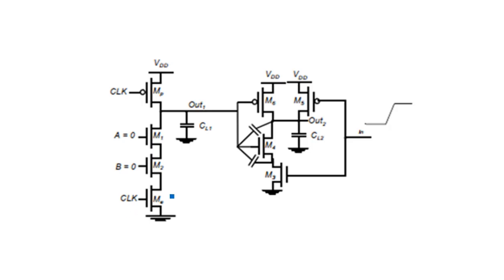Now coming to the third case, which is capacitive coupling. The high impedance of the output node makes the circuit very sensitive to crosstalk effects. Until now we discussed problems where one of the inputs is a static input, but in capacitive coupling we focus on how wires routed over a dynamic node can couple capacitively and destroy the state of the floating node.